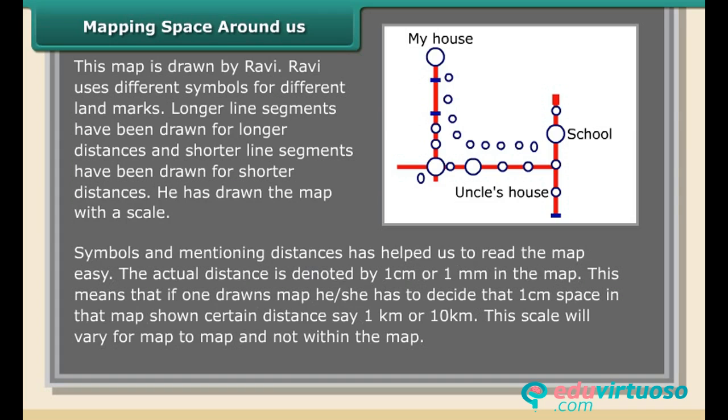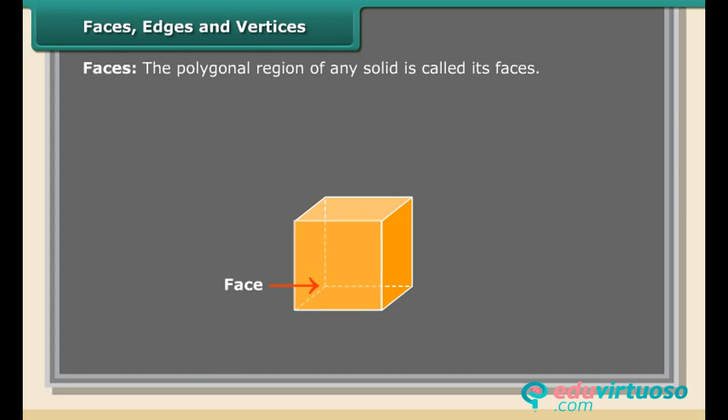Faces, edges, and vertices: Faces are the polygonal regions of any solid. Edges are the line segments along which two faces intersect. Vertices are the points at which three or more faces meet.